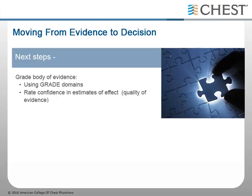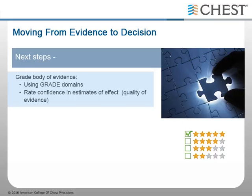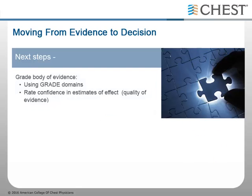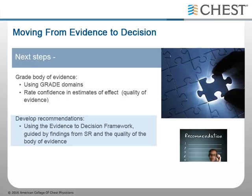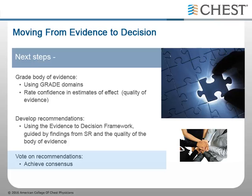Once the findings of a systematic review have been synthesized, either qualitatively or quantitatively in a meta-analysis, the next major step in moving from evidence to recommendation is to grade the overall quality of the body of evidence. This is done by using the GRADE process, using their domains of risk of bias, inconsistency, indirectness, imprecision, and publication bias. These domains and their effect on the quality of evidence will be discussed in more detail in later modules. Once a guideline panel has graded the body of evidence, they can then move on to developing recommendations, which are informed by the findings from the systematic review and the quality of the evidence. A guideline panel can then move on to voting on the developed recommendations to achieve consensus agreement.